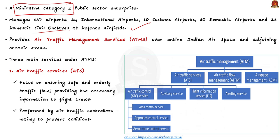AAI also provides Air Traffic Management Services, ATMS, over the entire Indian airspace and adjoining oceanic areas. Air Traffic Management comprises three main services: Air Traffic Services (ATS), Air Traffic Flow Management (ATFM), and Airspace Management (ASM).